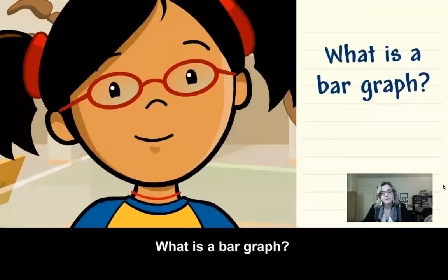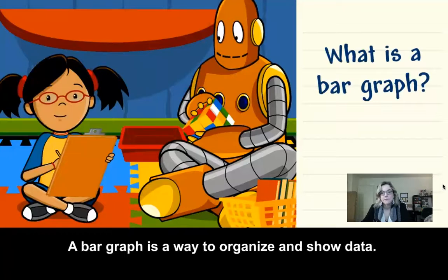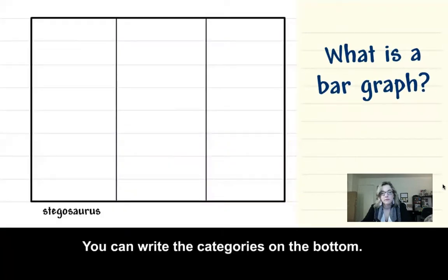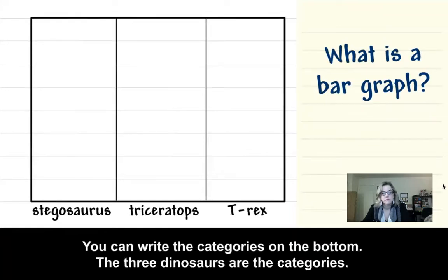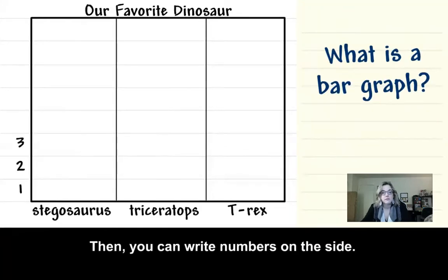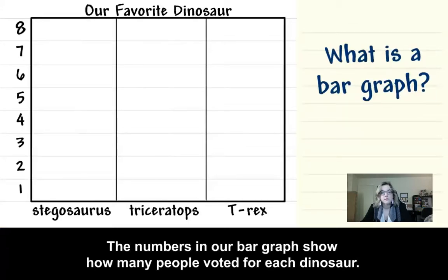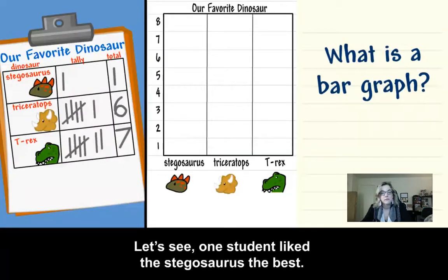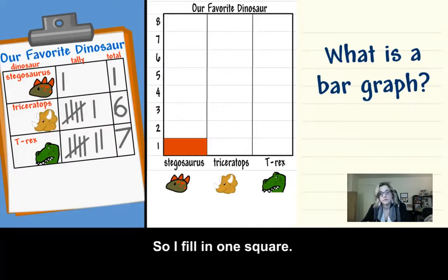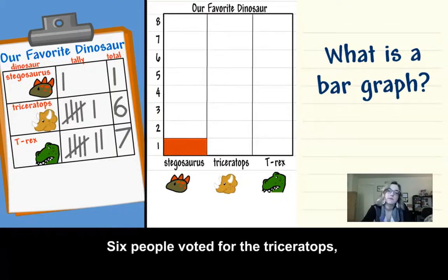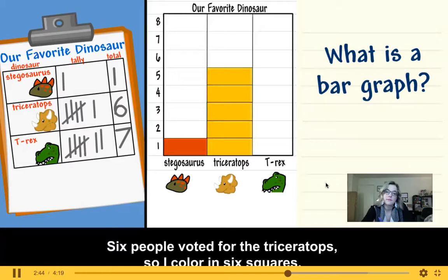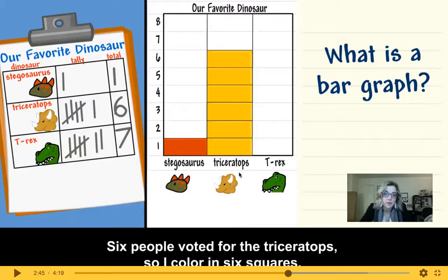What is a bar graph? A bar graph is a way to organize and show data. You can write the categories on the bottom — the three dinosaurs are the categories. Then you can write the numbers on the side. The numbers in our bar graph show how many people voted for each dinosaur. One student liked the Stegosaurus the best, so I fill in one square. Six people voted for the Triceratops, so I color in six squares. Notice how instead of using pictures like in a picture graph, she's choosing to use different colors — that's a great way to organize your data.